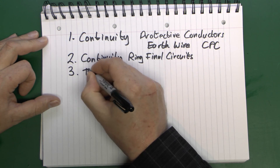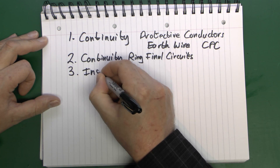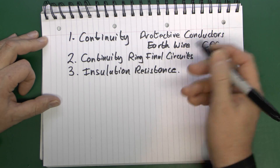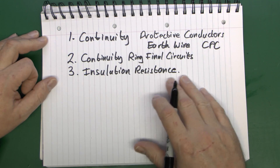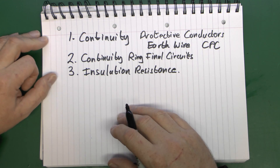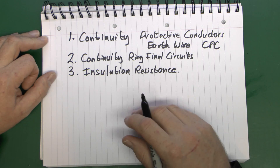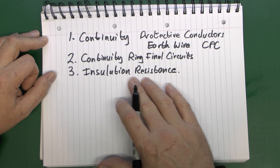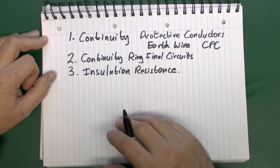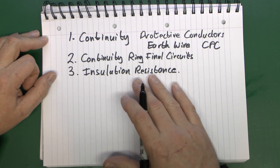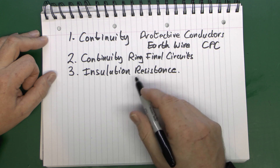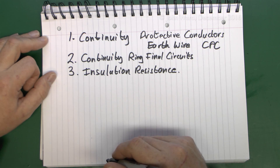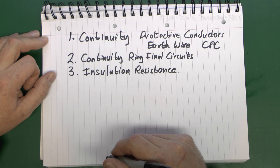Test number three is insulation resistance. This is the one where you typically apply voltage — say 500 volts from a test device — and check between line, earth and neutral. You're looking at the quality of the installation, making sure the cables haven't been damaged or there's no defect anywhere. This is done on all of the circuits, regardless of what type they are.